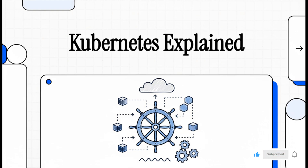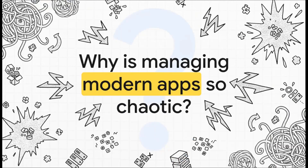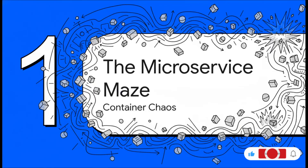If you've been anywhere near the cloud native world, you've definitely heard the name Kubernetes. But what is it, really? Today we're going to pull back the curtain and break down why this one technology has totally changed the game for building and running software. To really get why Kubernetes is such a big deal, we have to understand the problem it was built to solve: what was so incredibly chaotic about managing modern applications in the first place?